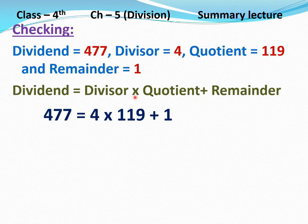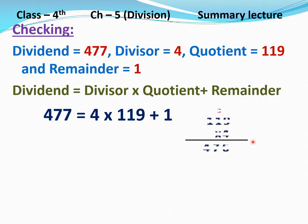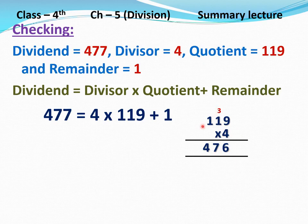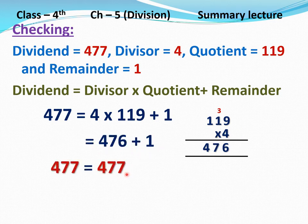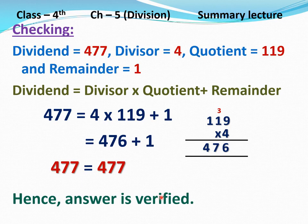Write down: Dividend equals divisor multiplied by quotient plus remainder. 477 equals 4 multiplied by 119 plus 1. First multiply 119 by 4: 4 nines are 36, write 6 and carry 3; 4 ones are 4 plus 3 is 7, write 7; 4 ones are 4, write 4. 119 multiplied by 4 equals 476. So 476 plus 1 equals 477. Left-hand side and right-hand side are both equal, hence answer is verified. Clear?